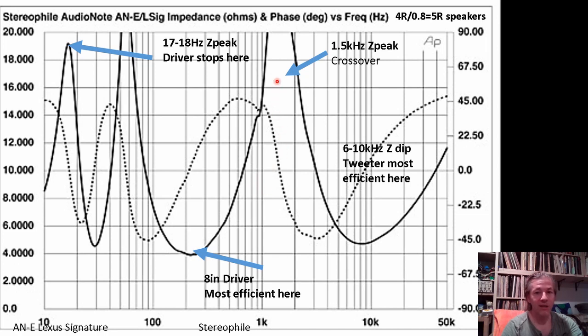These peaks are really bad for transistor amplifiers because transistor amplifiers need these valleys to work well, where they can dump current. If you see the impedance rising, they cannot dump current and become unstable. Tube amplifiers are the exact opposite. The higher the impedance, the lower the tube distortion. This is a very important lesson for everyone.